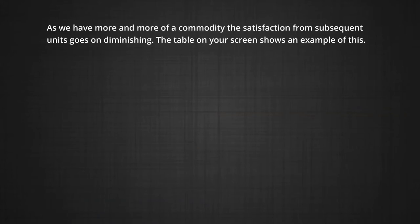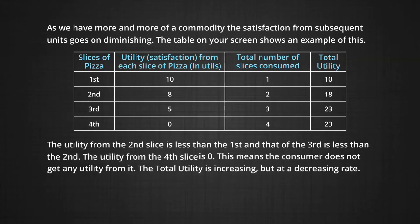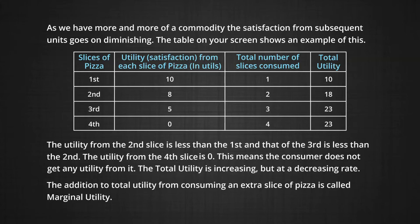Eventually, you may even begin to feel a little sick of pizza. This brings us to the conclusion that as we have more and more of a commodity, the satisfaction from each subsequent unit goes on diminishing. The table on your screen shows an example of this. Notice the utility from the second slice is less than that from the first, and that of the third slice is even less than that of the second. The utility from the fourth slice of pizza is actually zero, meaning the consumer does not get any utility from it. The total utility is increasing, but notice that it is increasing at a decreasing rate. The addition to total utility from consuming an extra slice of pizza is called marginal utility.